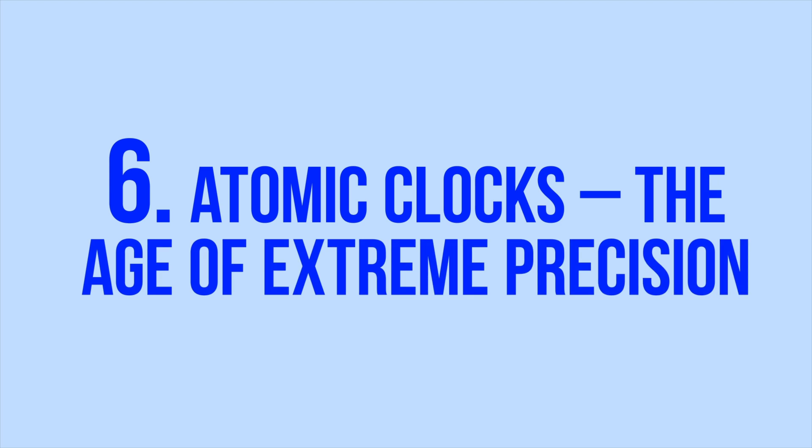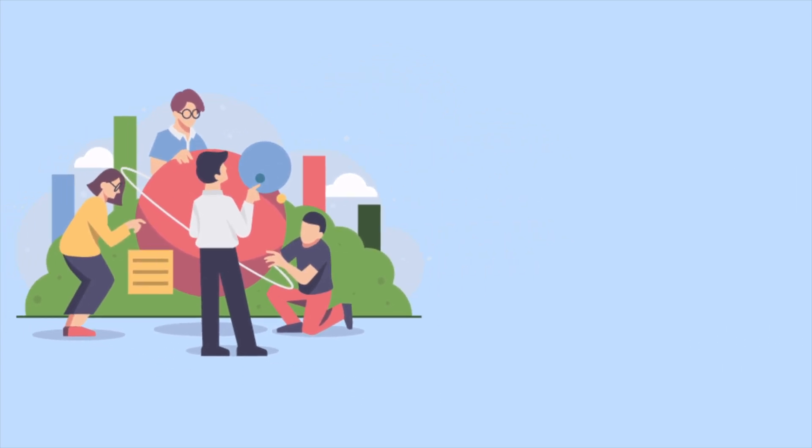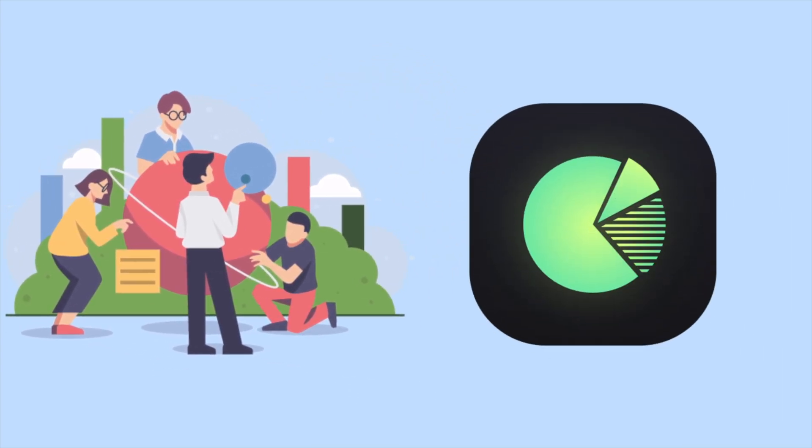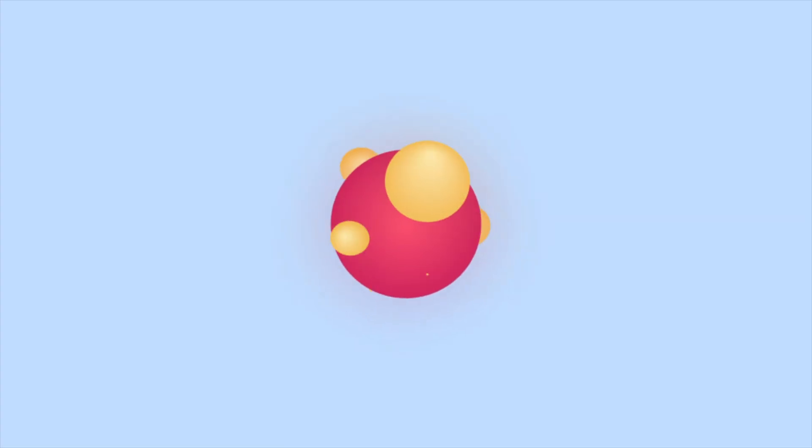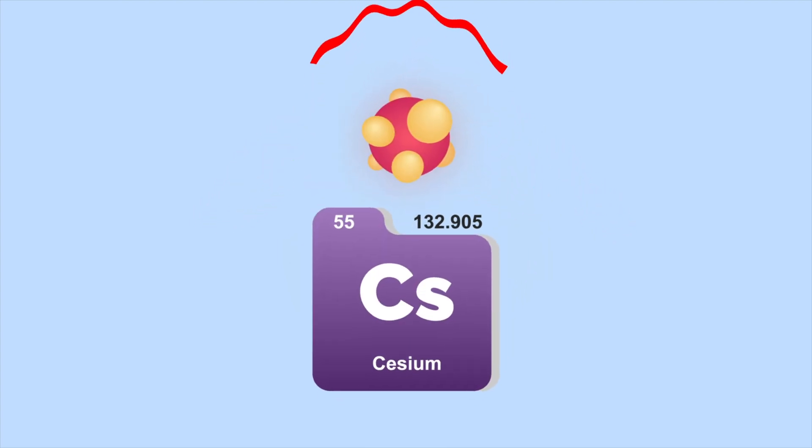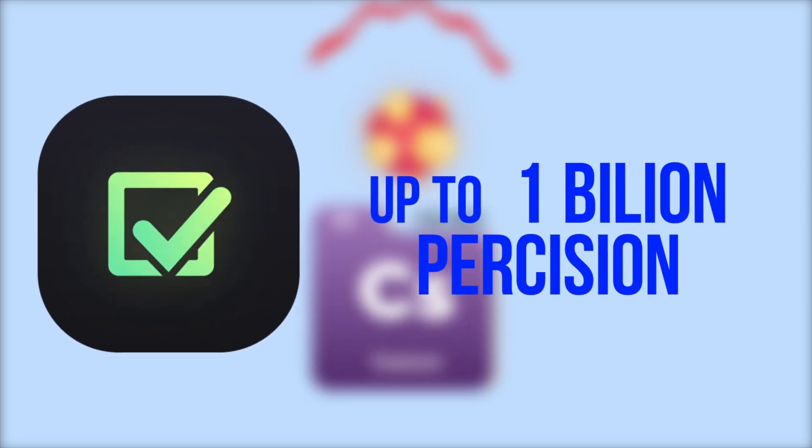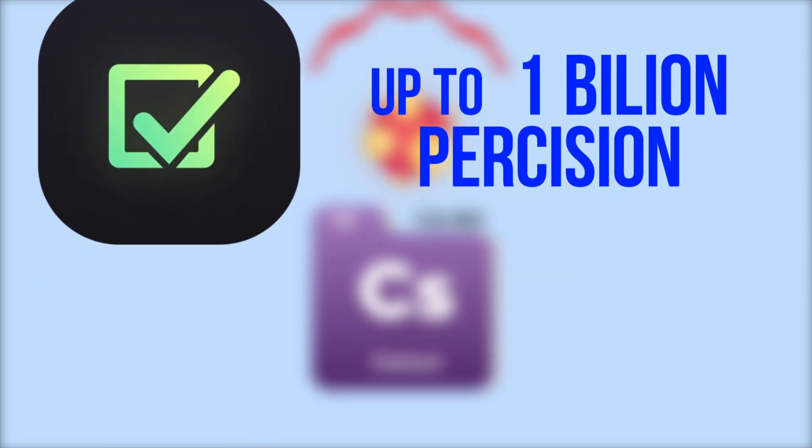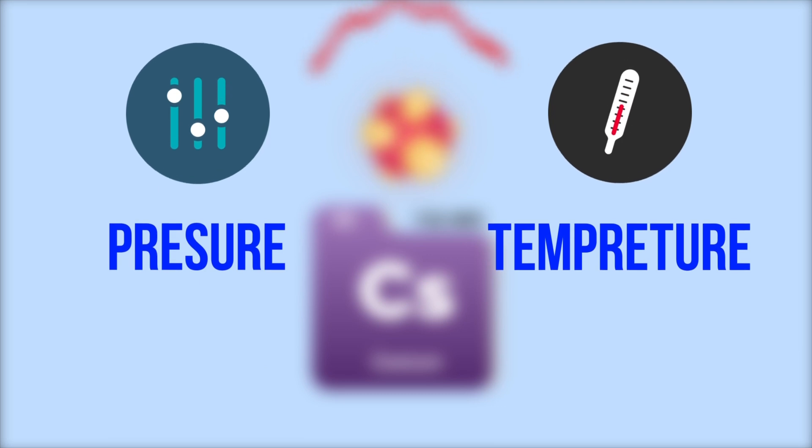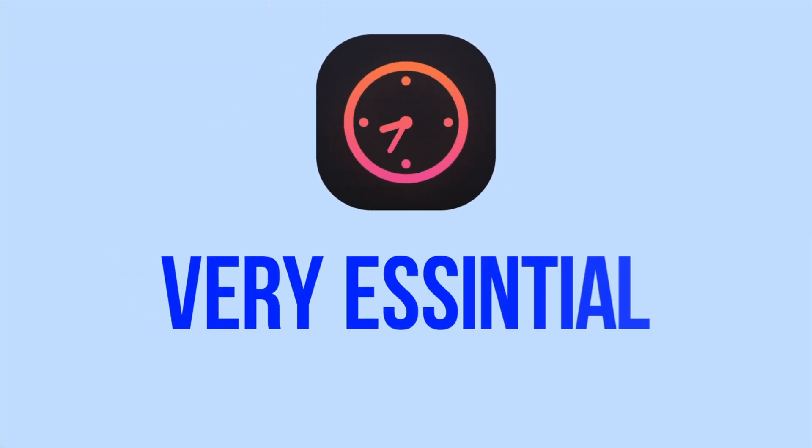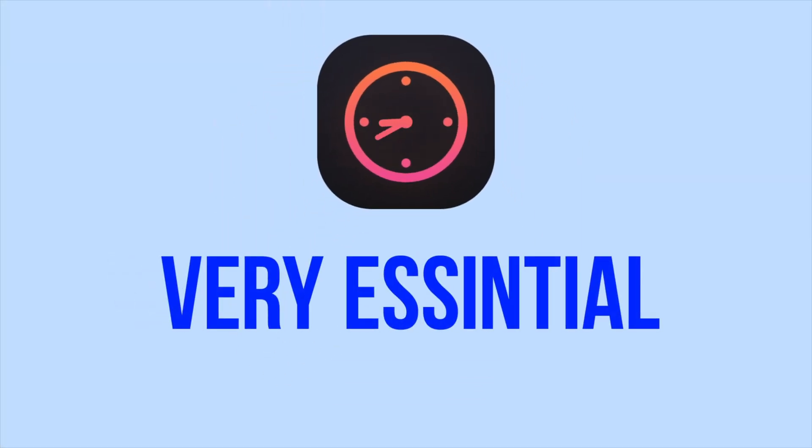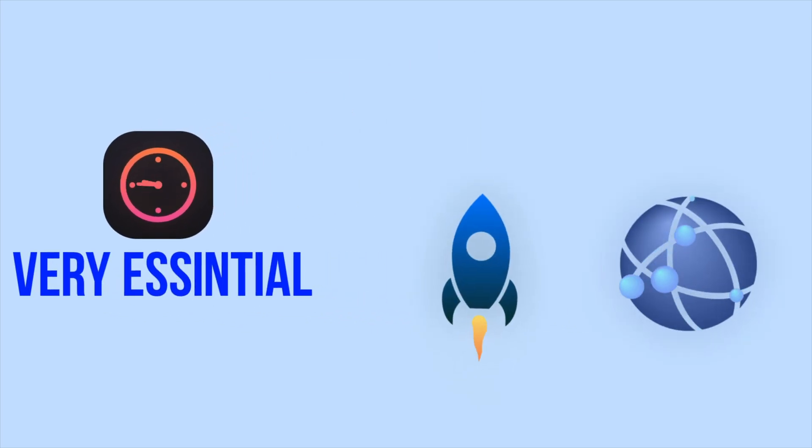Atomic Clocks - The Age of Extreme Precision. In the modern era, atomic clocks have brought about a true revolution in time measurement. These clocks rely on atomic vibrations, particularly of cesium atoms, to measure time with extraordinary accuracy, reaching precision up to one billionth of a second. They are unaffected by environmental factors such as temperature or pressure. Atomic clocks have become essential for applications requiring absolute time precision, such as communications and satellite broadcasting.